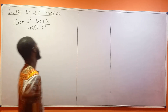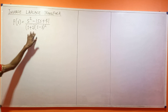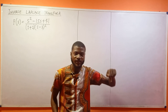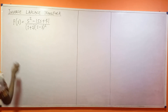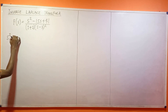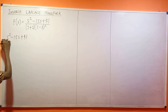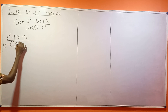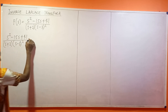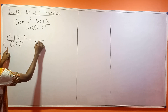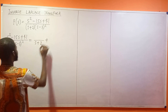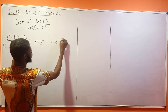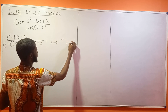First of all, let us split this into partial fractions. So right now I'm going to write s² minus 15s plus 41, divided by (s+2)(s-3)², equal to A over (s+2), plus B over (s-3), plus C over (s-3)².